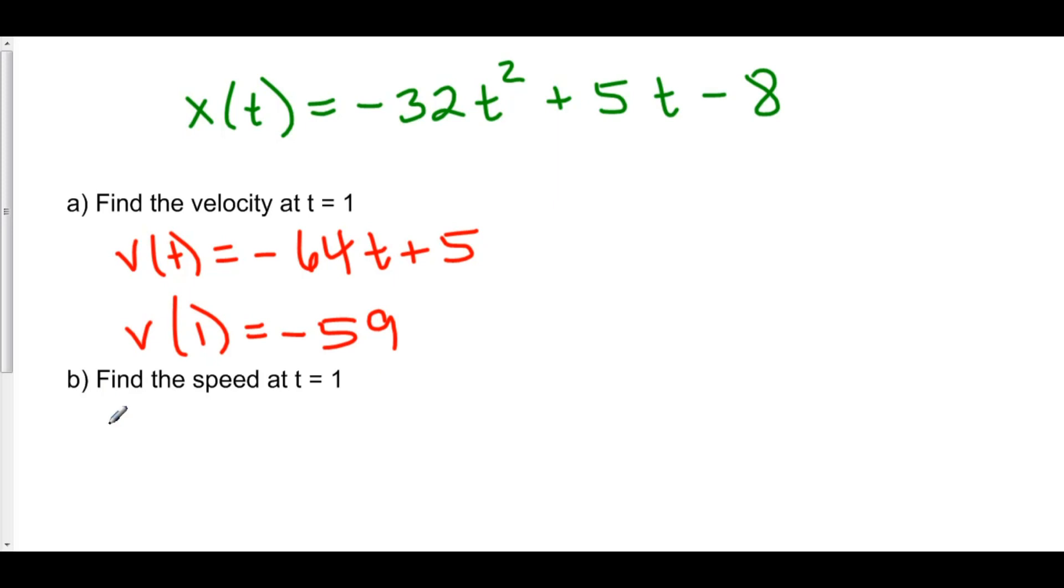Now let's find the speed at time t equals 1. Speed is equal to the absolute value of velocity. And the absolute value of velocity at time 1 is positive 59. So, while our velocity at time t equals 1 is negative 59, because we're going in the negative direction, our speed is positive 59 because speed is just the absolute value of velocity.